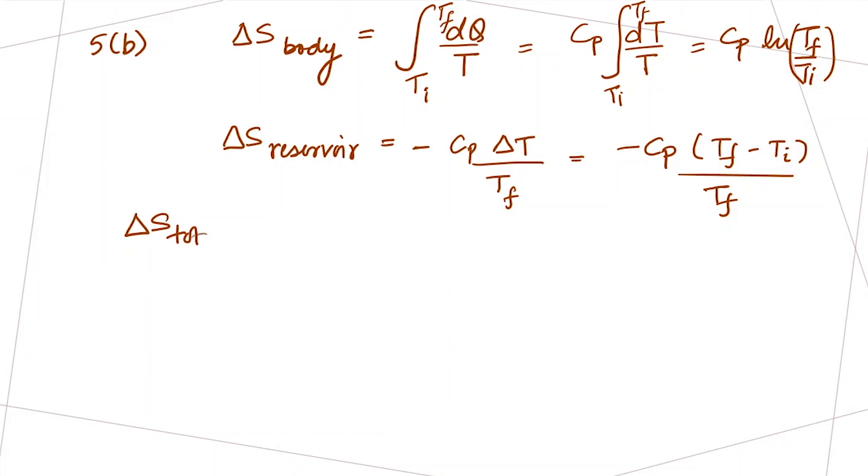Let's find the total change, which equals CP log (TF over TI) minus CP times (TF minus TI) over TF. This is the total change in entropy.